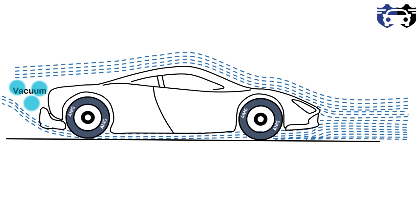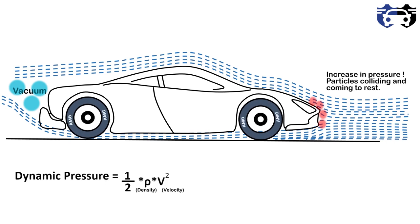In the front, there is an increase in pressure. According to Bernoulli's principle, the dynamic pressure of air is converted into static pressure due to colliding of air particles and coming to rest. This will cause the increase in pressure in front.